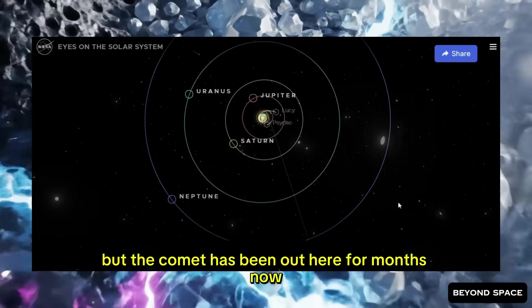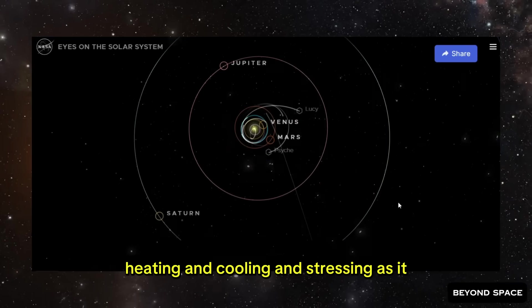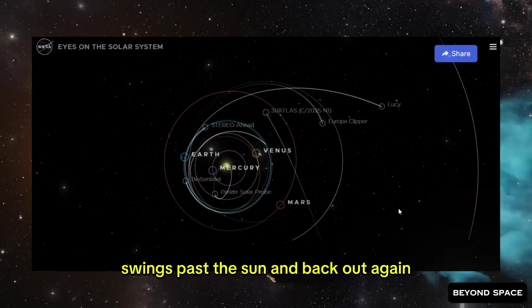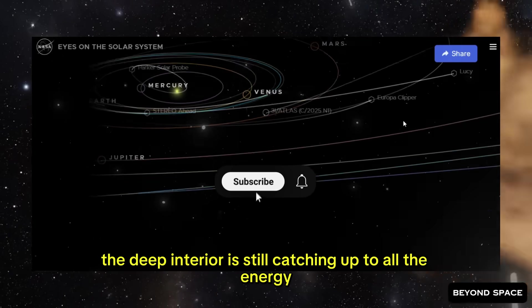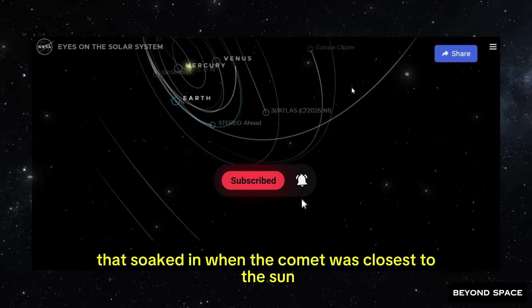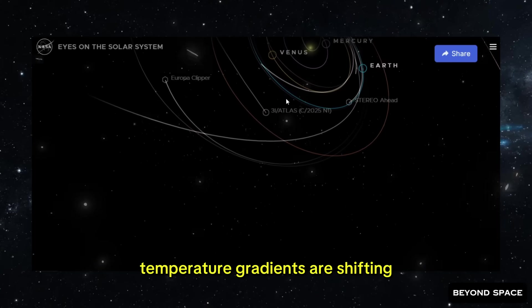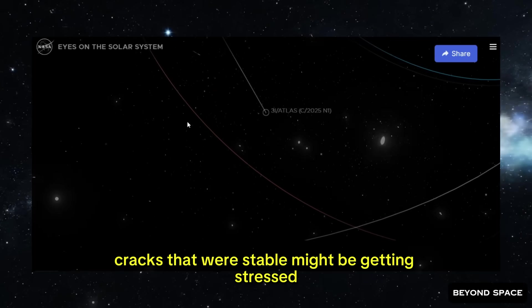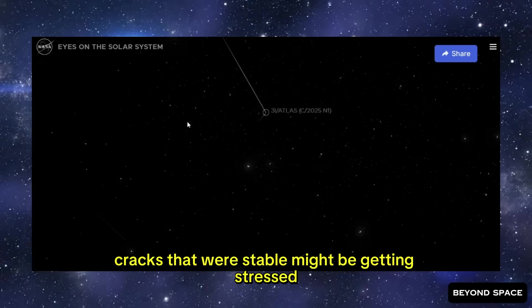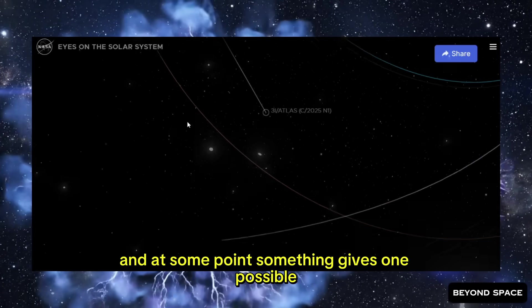And because it's been fairly steady, the non-gravitational push on the comet has been fairly steady too. But the comet has been out here for months now, heating and cooling and stressing as it swings past the sun and back out again. The deep interior is still catching up to all the energy that soaked in when the comet was closest to the sun. Temperature gradients are shifting. Pressure is building in new places. Cracks that were stable might be getting stressed. And at some point, something gives.